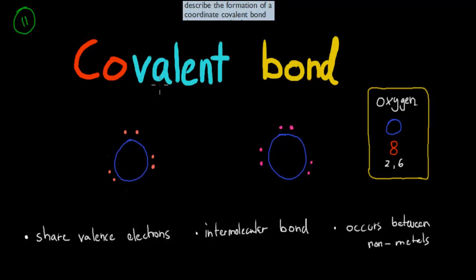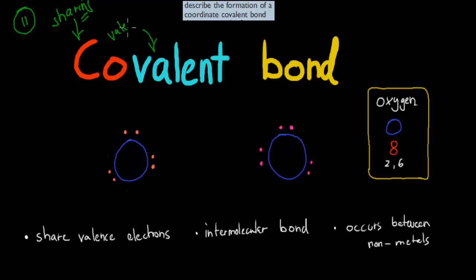Now it has three parts to its name. 'Co' stands for cooperation — it has something to do with cooperation, as in co, as in sharing, so they're sharing something. 'Valent' comes from the word valence electrons, and obviously 'bond' means that they're coming together, they're sticking together, and the reason why is because they're sharing valence electrons.